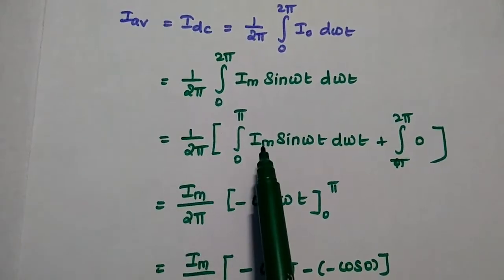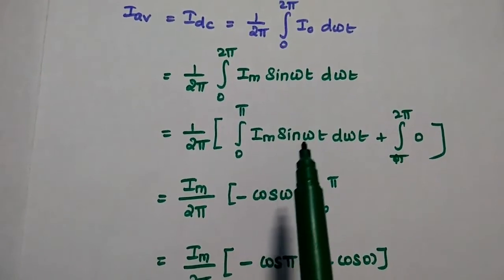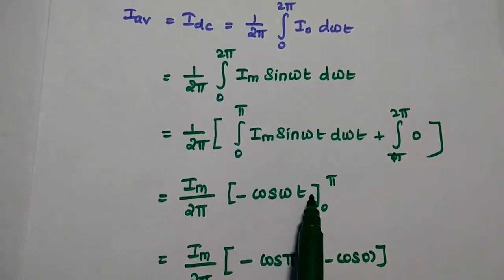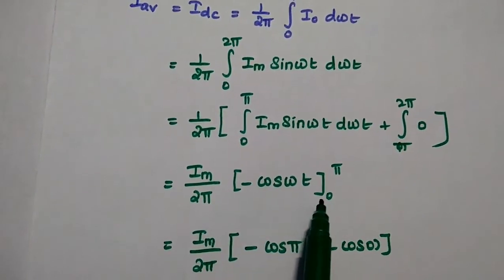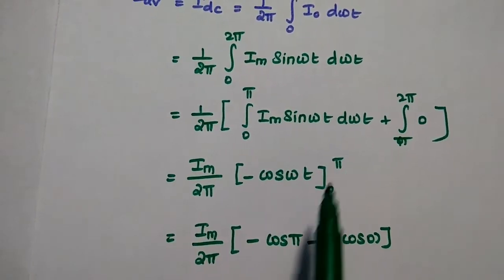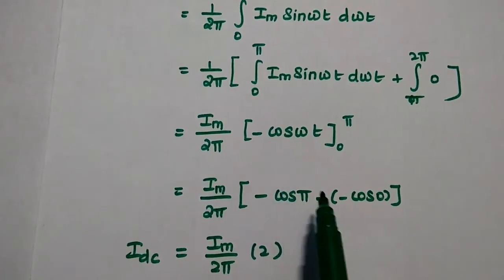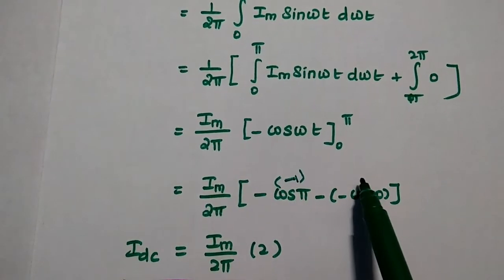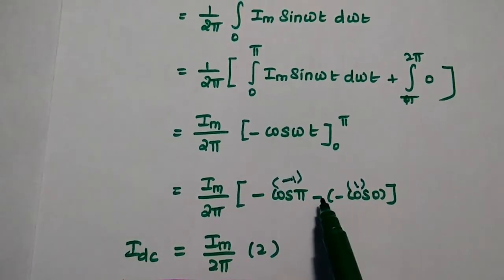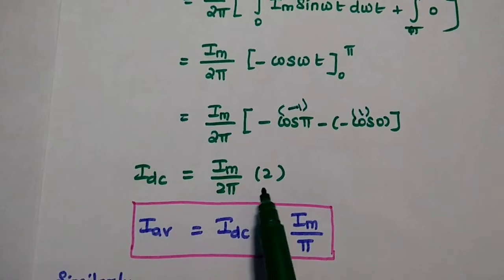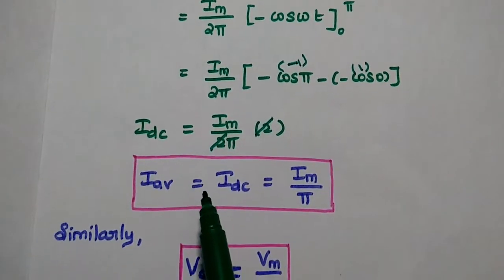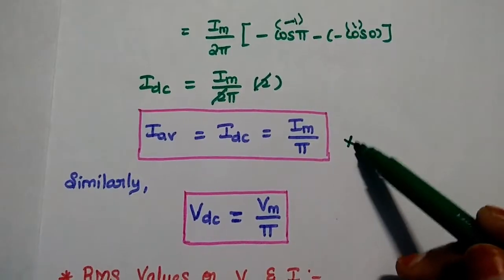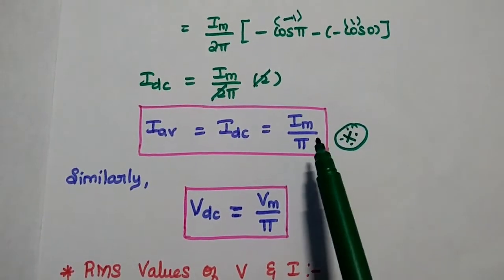Taking Im outside as a constant, we get Im/(2π) times the integral of sin(ωt) with respect to ωt. Integrating sin gives −cos(ωt), with the limit from 0 to π. Substituting: −cos(π) − (−cos(0)) = −(−1) − (−1) = 1 + 1 = 2. Simplifying, we get the average (DC) current as Im/π. This is a very important parameter: the DC current value is Im/π, where Im is the maximum current value. Similarly, the DC voltage value is Vm/π.